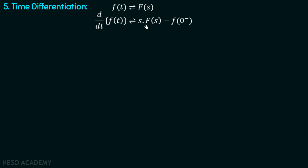Here, F(s) is the Laplace transform of f(t), and f(0⁻) is the value of the function f(t) when t equals 0 minus. We call this the initial value or initial condition of f(t). So whenever we differentiate a function in the time domain and check for its Laplace transform, the Laplace transform of the original function is multiplied with s and the initial value is subtracted.